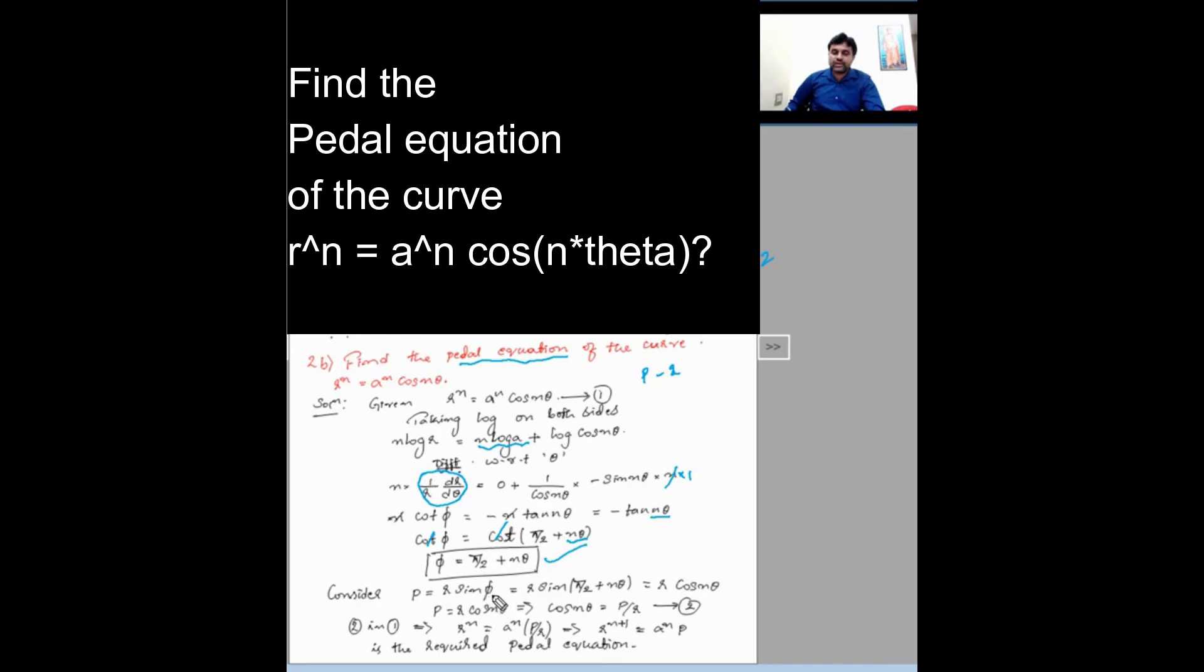Substitute that value phi here: sin of (phi/2 + n theta) becomes cos n theta. You are going to get P = r cos n theta. So from this equation, cos n theta is P/r.